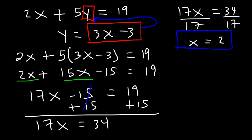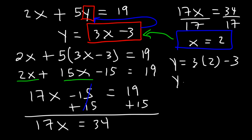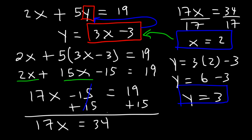Now once we have x, let's plug it into the second equation — because we already have y by itself. 3 times 2 is 6, and 6 minus 3 is 3. So y is equal to 3. So our answer as an ordered pair is 2 comma 3, and that is the solution.